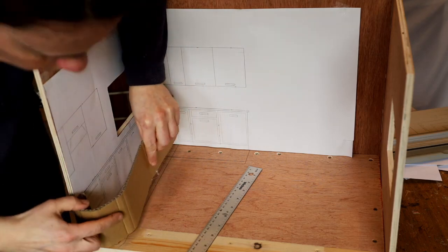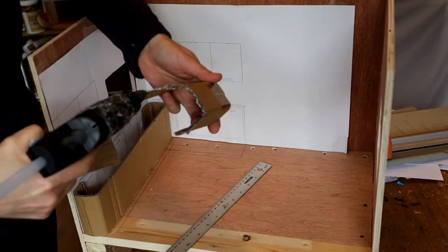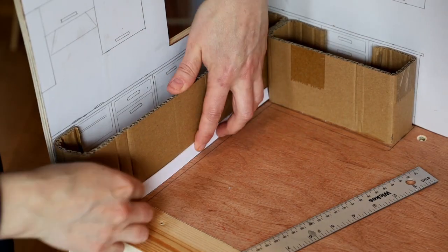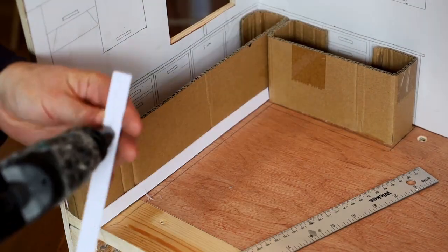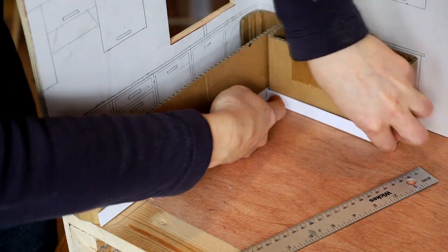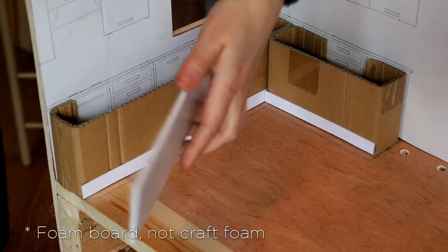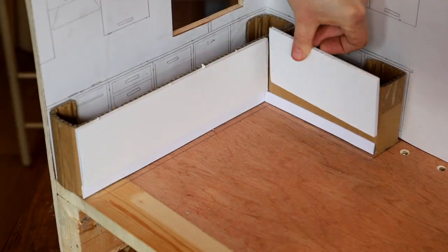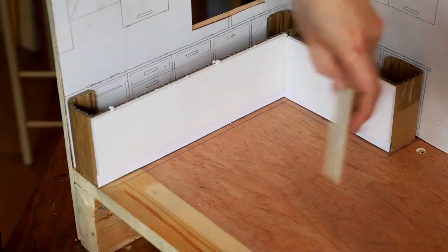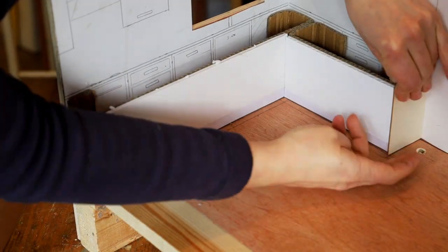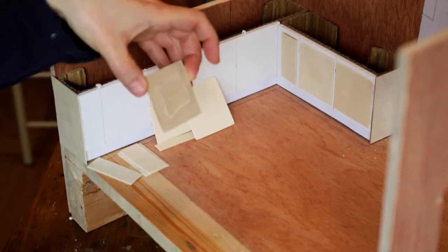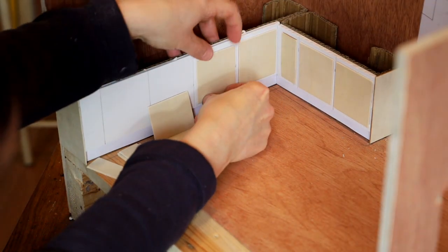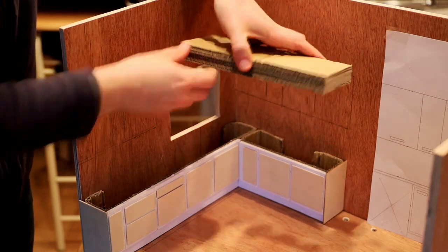Then I started building up some volume with some cardboard and the hot glue gun. I've added the skirting made with a piece of card. For the cabinets I've used five millimeter craft foam. I've added side panels with a bit of balsa wood.